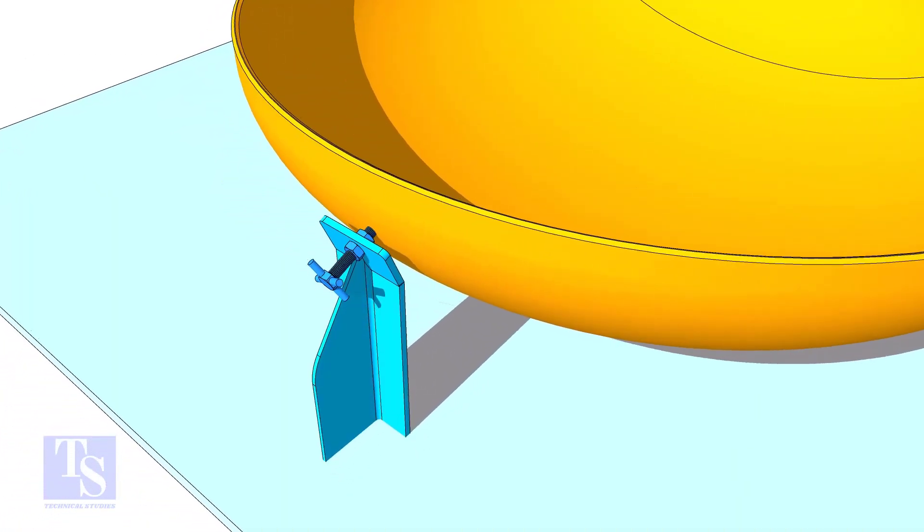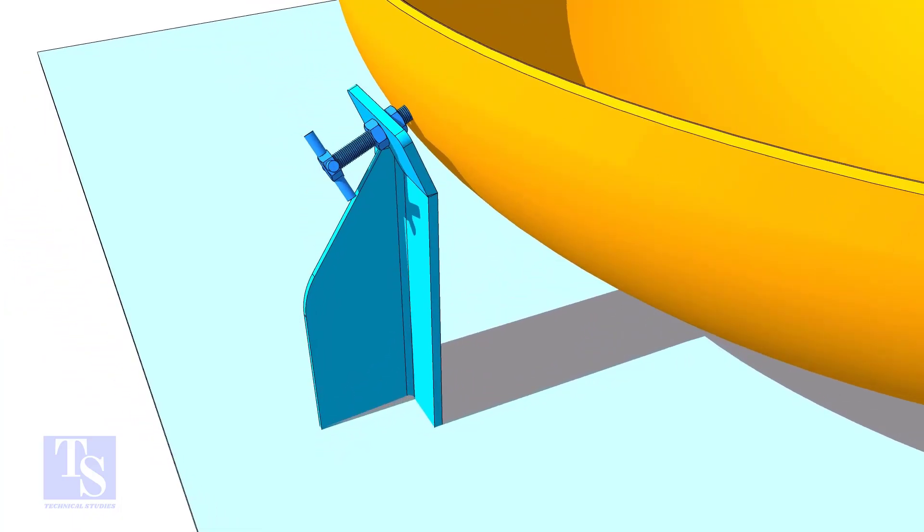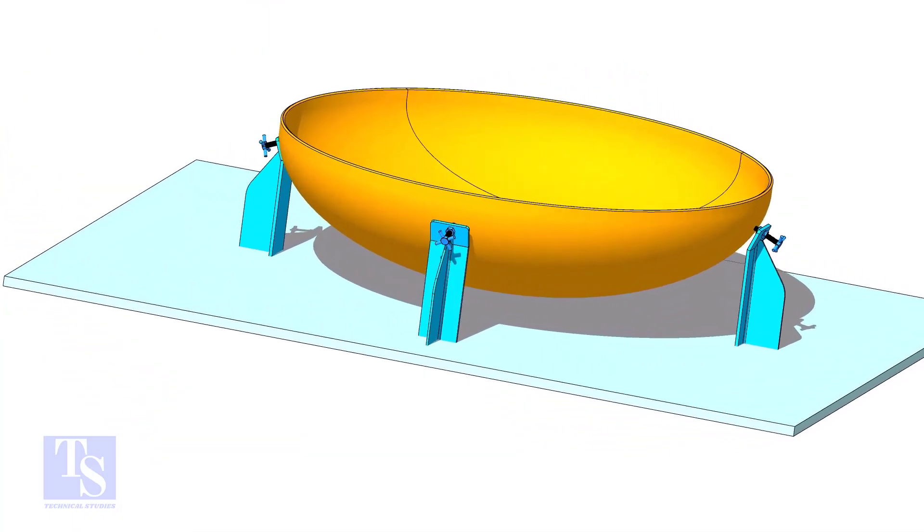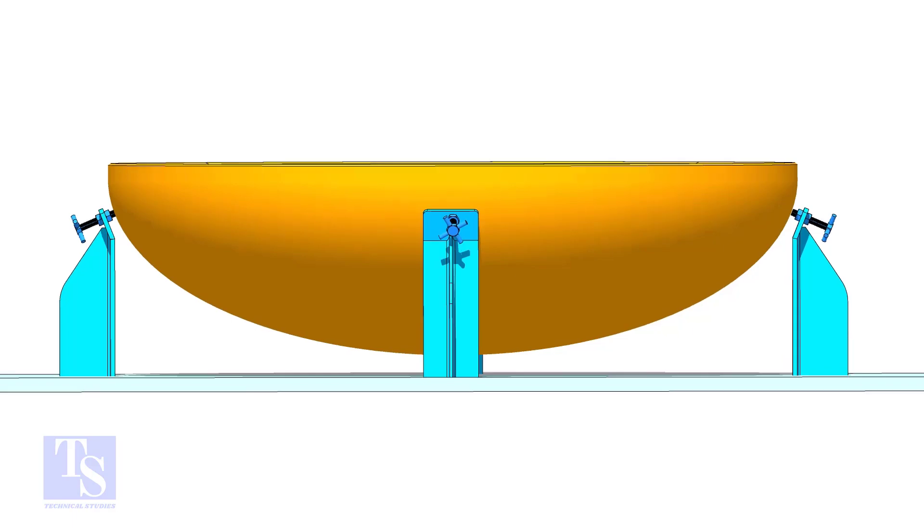Make simple jack bolts, as shown here, so that you can level the dish end easily. After leveling the dish end, make the beveling as per the drawing.